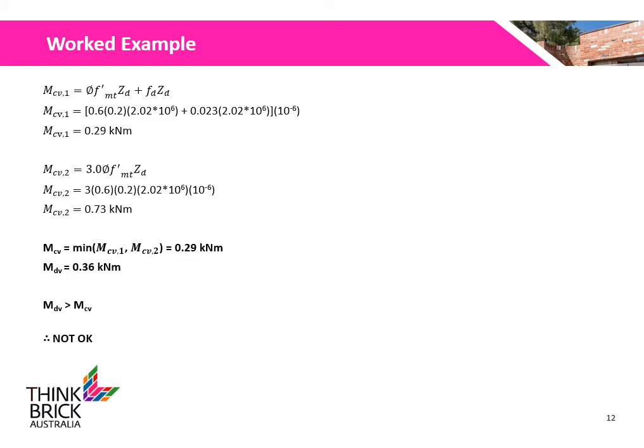The vertical bending moments are now calculated. The first equation accounts for both the tensile strength of the masonry and the compressive strength provided by the wall's dead weight, calculated to be 0.29 kNm. The second equation accounts for only the tensile strength of the masonry, calculated to be 0.73 kNm. The minimum of the two values is 0.29 kNm. As the vertical bending capacity is less than the design vertical bending moment, the wall will fail and must be redesigned to meet the design out-of-plane loading.